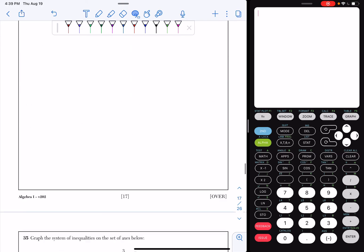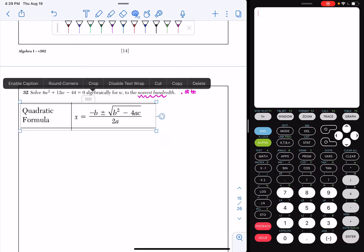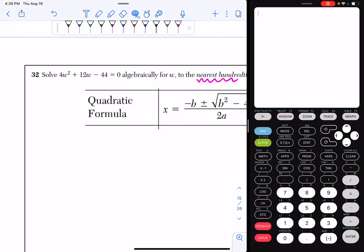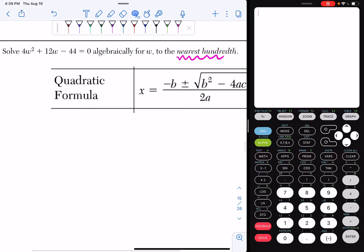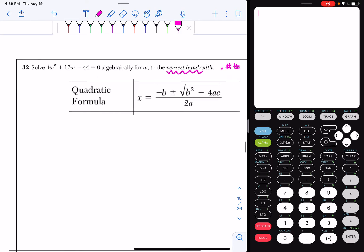So we're going to go back up and this is what we're going to use. If we look, our equation is already written in the form 4w squared plus 12w minus 44 equals 0. So everything is set equal to zero. So I can actually identify my a value, my b value, and my c values.